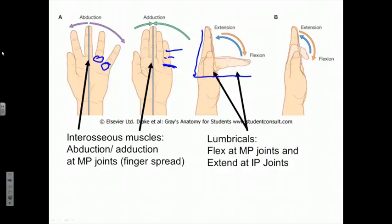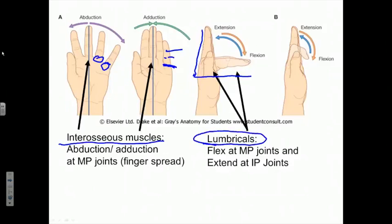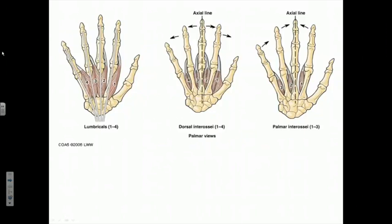The major muscles contributing intrinsically to these actions will be the interosseous muscles, which act as our finger-spread muscles, and the very interesting lumbrical muscles — intrinsic hand muscles named because somebody thought they looked worm-like. These muscles will have some very important actions because, as we will see, they will assist the extensor digitorum muscle in extending at the interphalangeal joints. So let's look at these muscles.